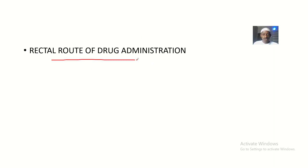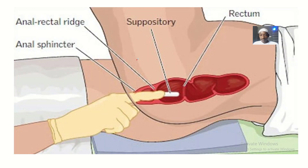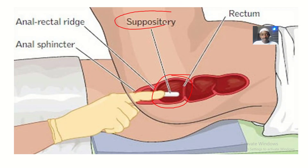The focus for us is the rectal route of drug administration — administering a drug through the rectum. One disadvantage of this route is that the types of drugs that can be administered through it are limited. It mainly uses suppositories and a few other examples. You place the drug using the anal opening into the rectum, and the drug is made in a way that it will melt at body temperature and get absorbed.